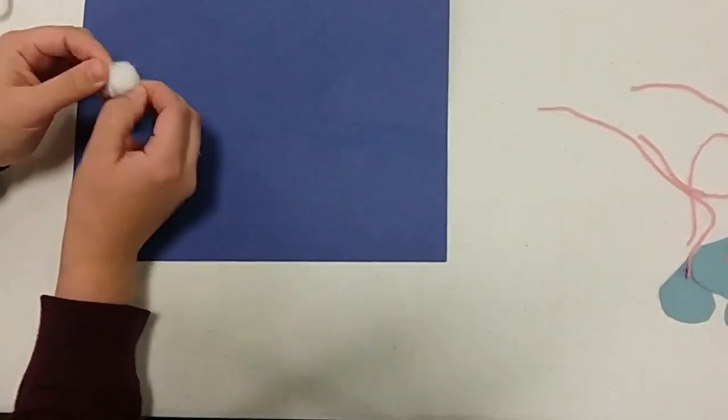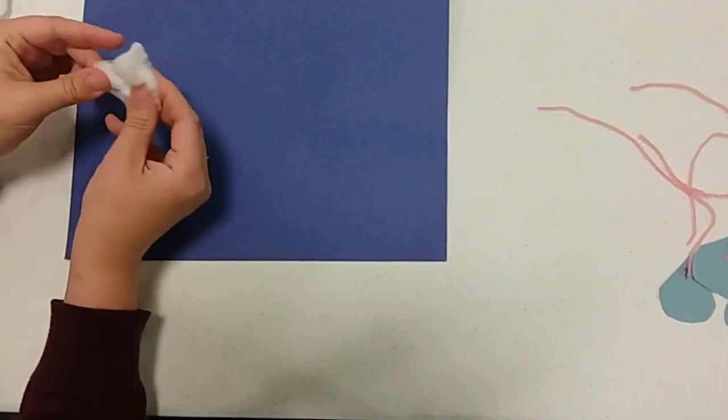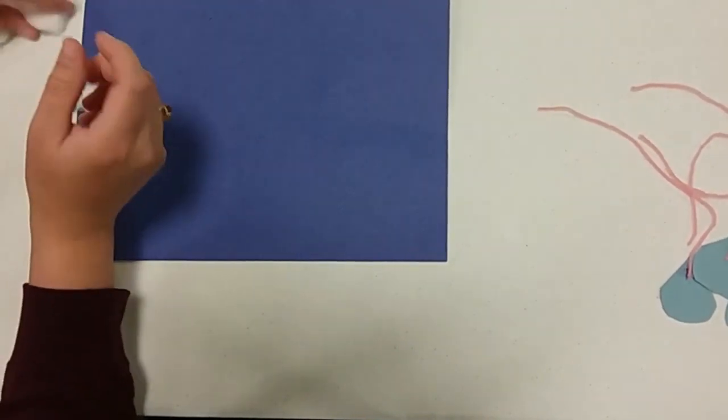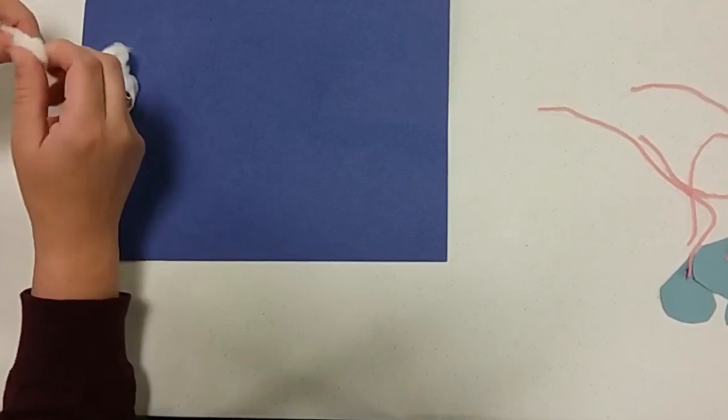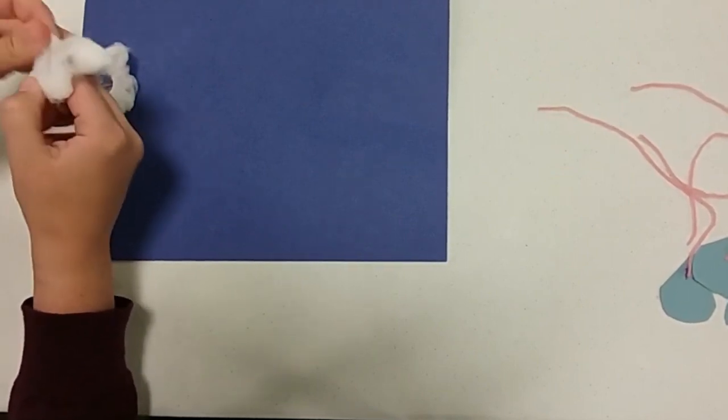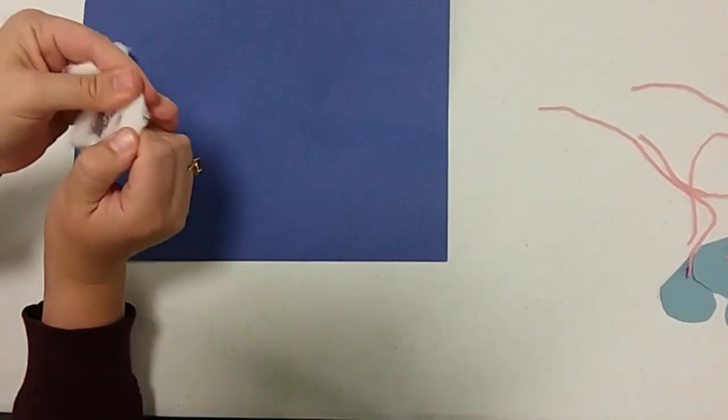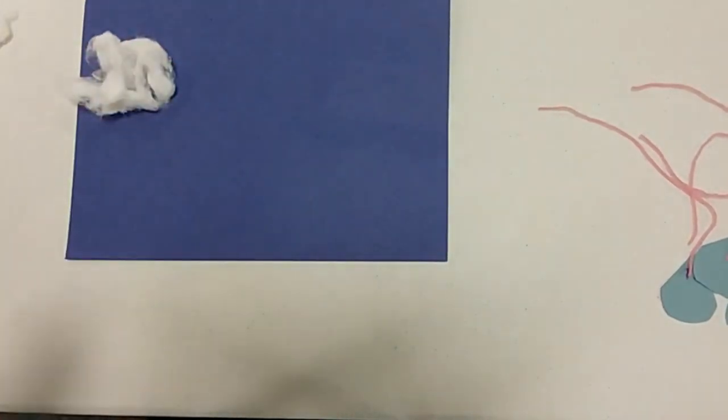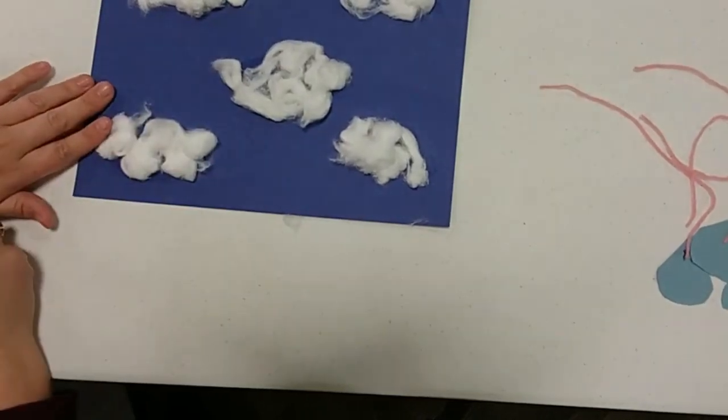I'm going to pull apart the cotton balls to look like clouds and then glue them on the paper. Now I have a sky full of fluffy clouds.